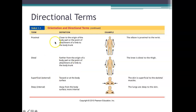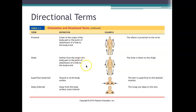Proximal means closer to the body trunk. The elbow is proximal to the wrist, and the shoulder is proximal to the elbow. Distal means further away — the wrist is distal to the elbow. These terms are really important when physicians describe diagnoses, read x-rays, or perform surgeries.